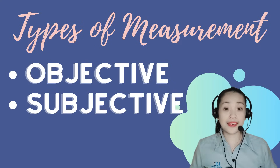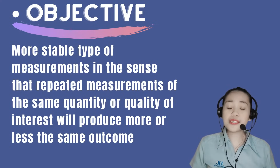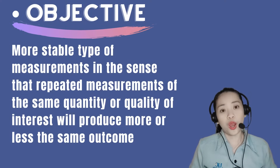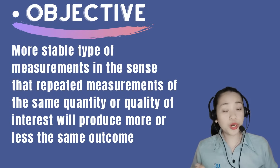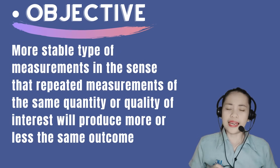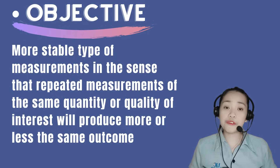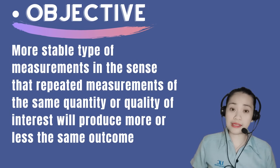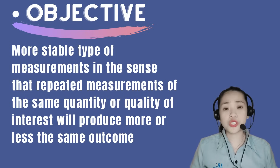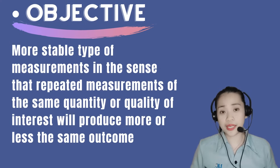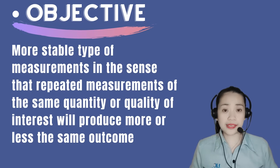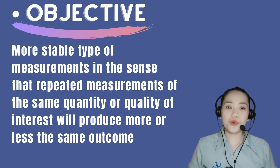Objective measurements are a more stable type of measurement in the sense that repeated measurements of the same quantity or quality of interest will produce more or less the same outcome. Testing is the most preferred type of measurement whenever available, and it does not depend on the individual taking the measurement — the same measurement values should be obtained regardless of who administers it. An example of objective measurement is a multiple choice test: if the answer is letter A, no matter who checks the paper, the answer will never change. It will always be letter A, which is why it is stable.